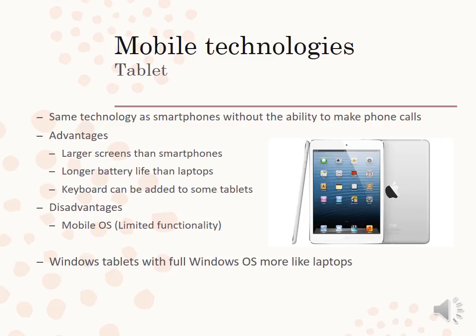Tablets are the in-between. They have the same technology as smartphones but they cannot make phone calls. The advantage is that their screen is bigger than a smartphone and they have a longer battery life than laptops, and sometimes you can add a keyboard to some tablets. The disadvantage is again the mobile operating system, which is limited in functionality. Windows tablets have the full Windows operating system and are more like laptops.